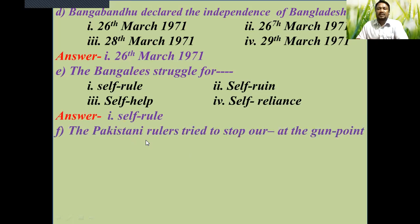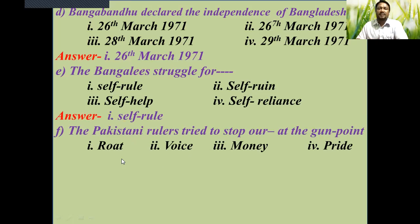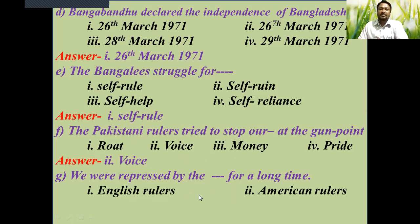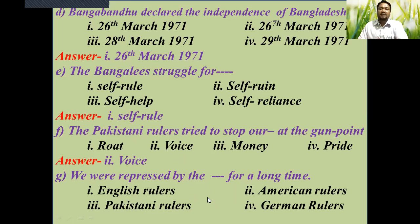The Pakistani rulers tried to stop our voice at gunpoint. The answer is: voice. We were repressed by the Pakistani rulers for a long time. The answer choices were English rulers, American rulers, Pakistani rulers, and German rulers. The answer is Pakistani rulers.